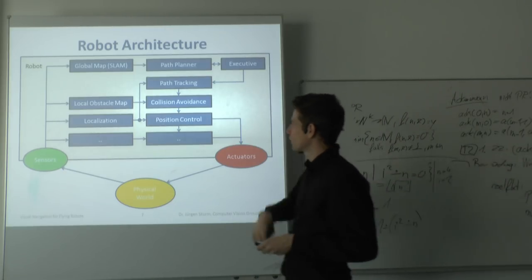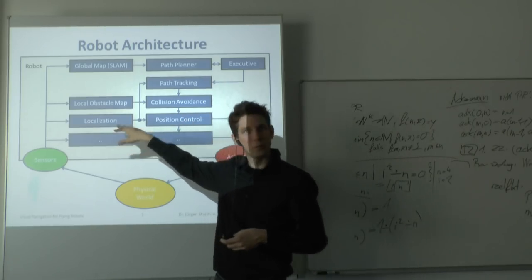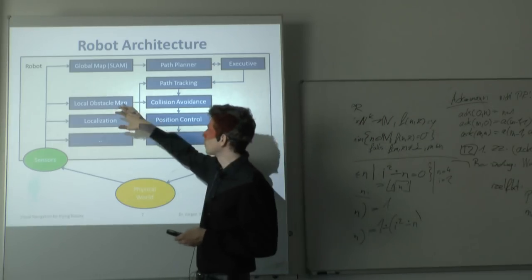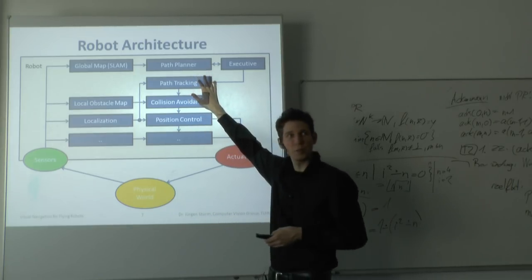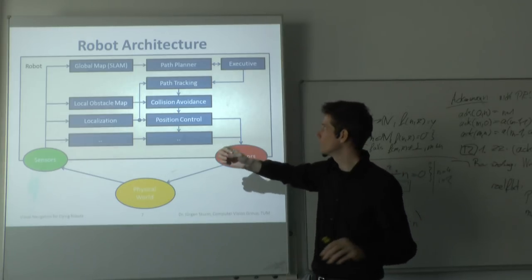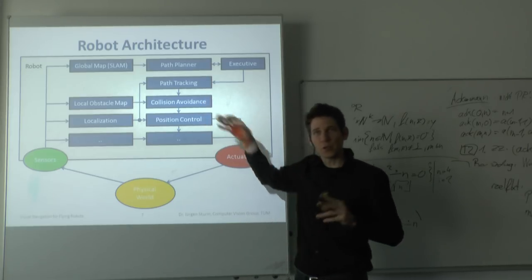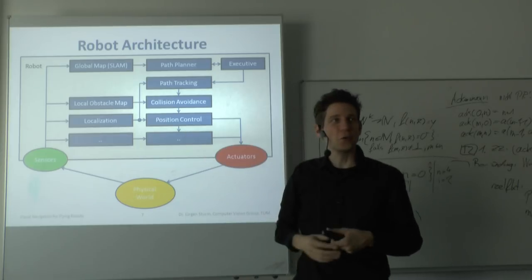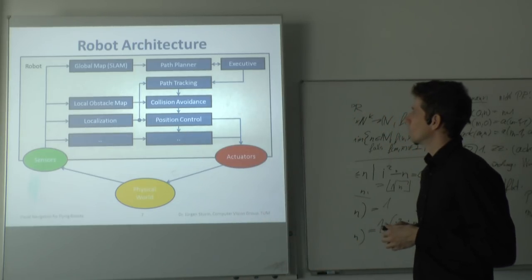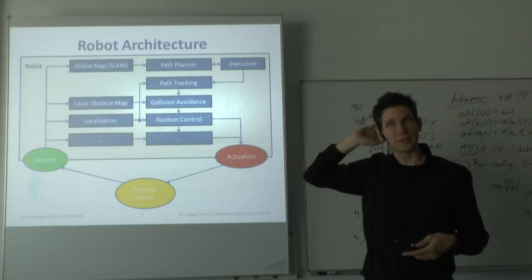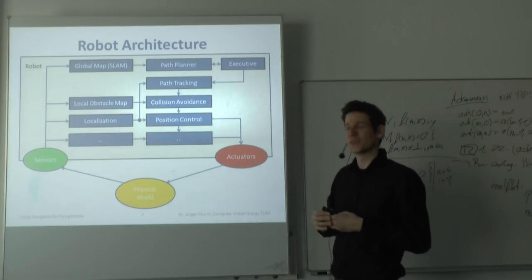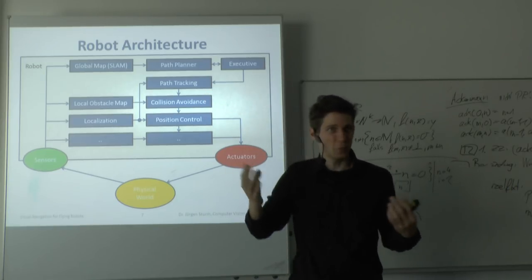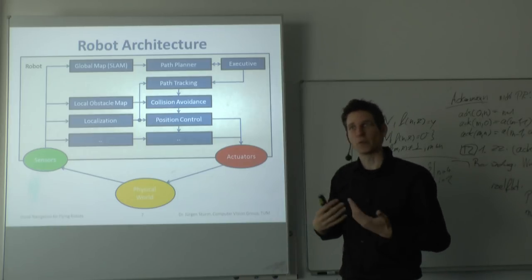Looking at the overall architecture: we previously localized the robot, built a 3D map, and used position control. Today we look at path planning — the global planning problem, where you have a large map and want to go from start to goal. There is also local planning, where you avoid collisions locally while following the computed path, including dynamic obstacles. An executive, such as a state machine, decides when to re-plan or generate a new plan if the robot gets stuck.